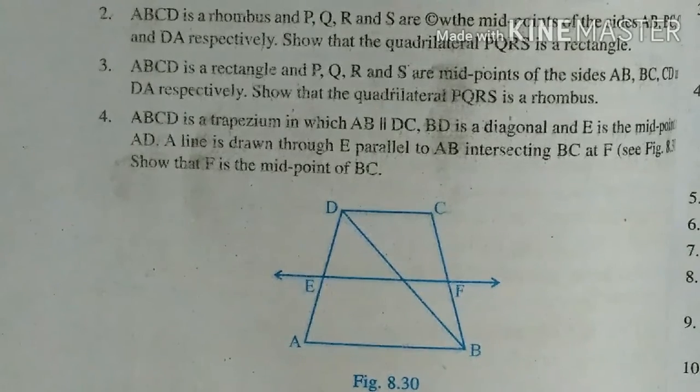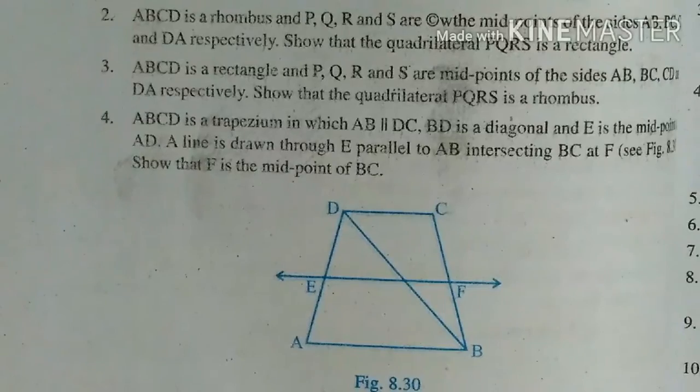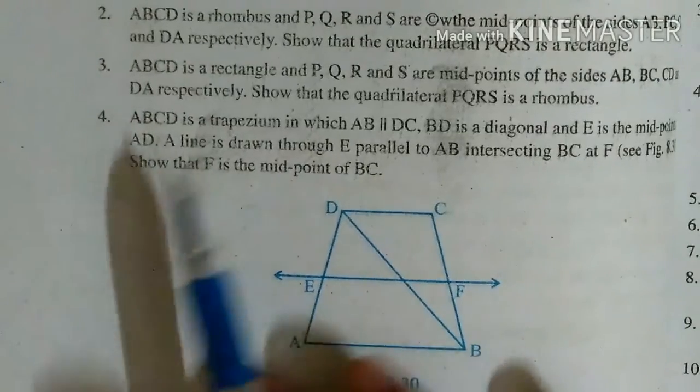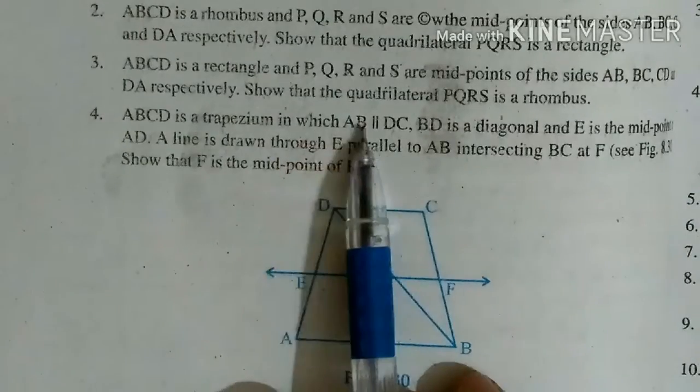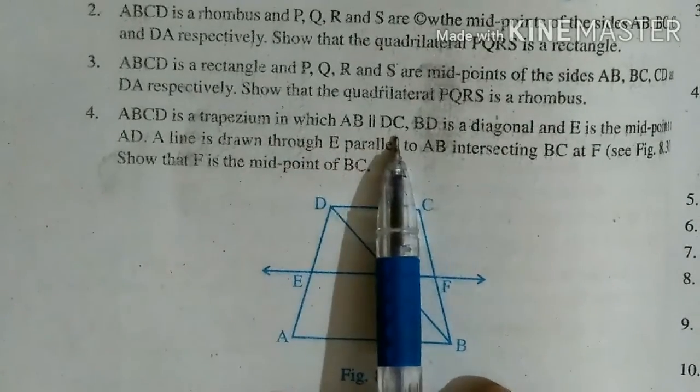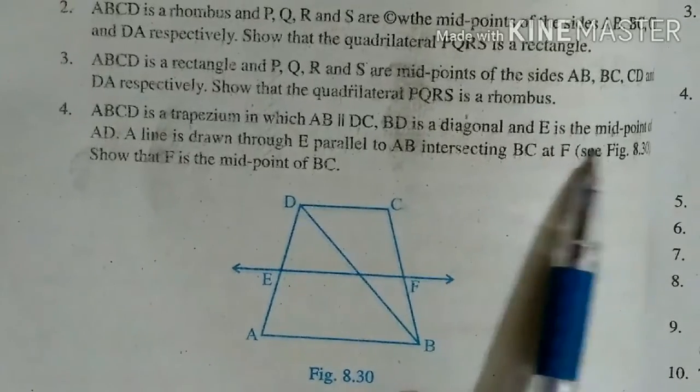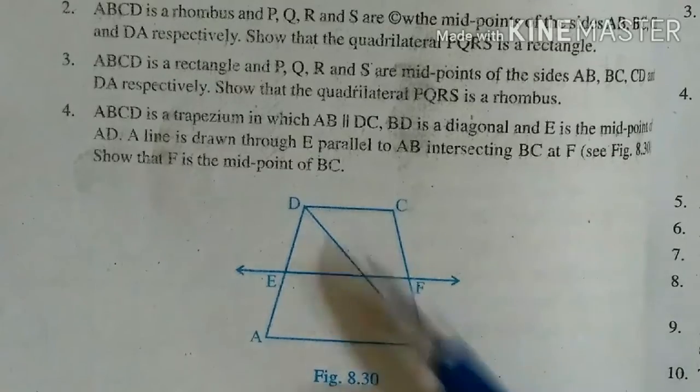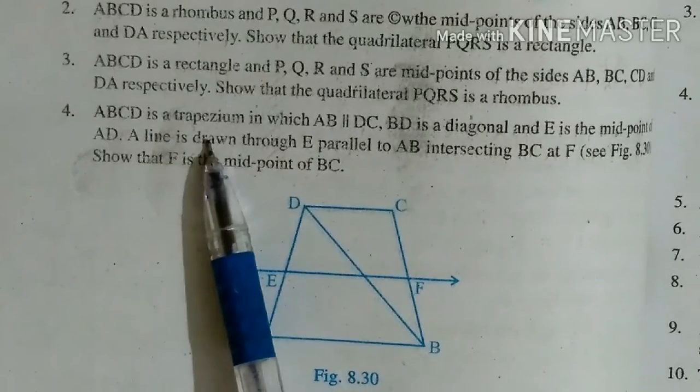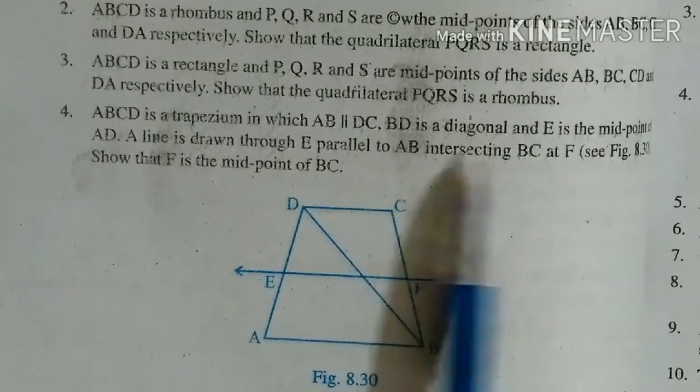Hello students, we are solving Exercise 8.2. Today we will try to solve question number 4. ABCD is a trapezium in which AB parallel DC, BD is a diagonal, and E is the midpoint of AD. Here you see the diagram. A line is drawn through E parallel to AB intersecting BC at F.